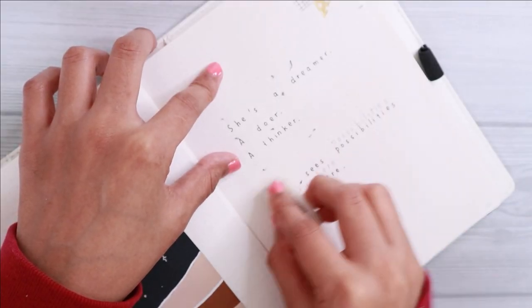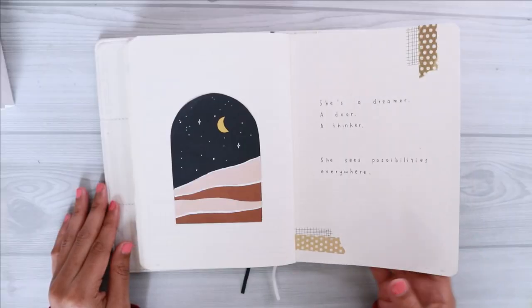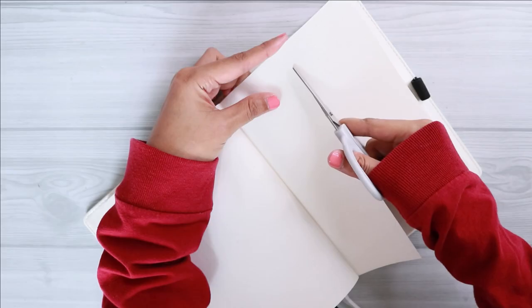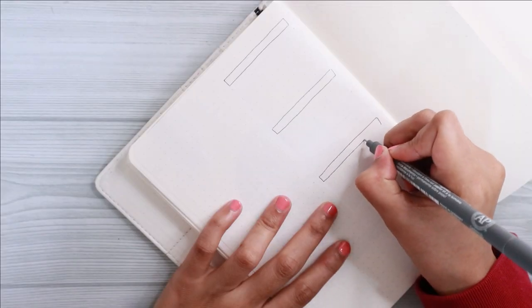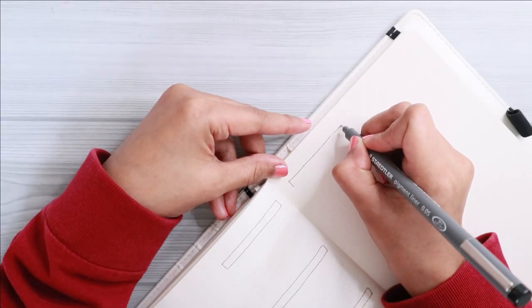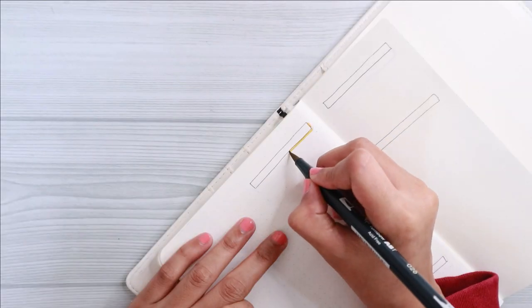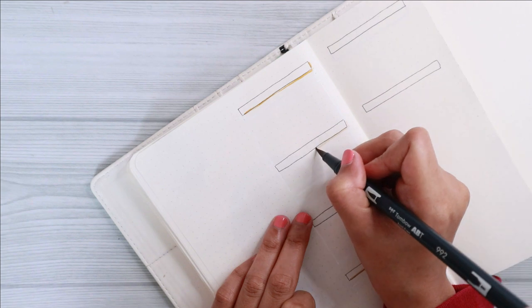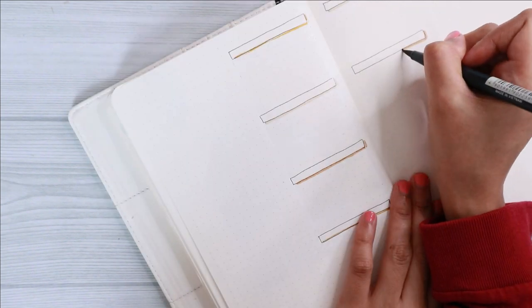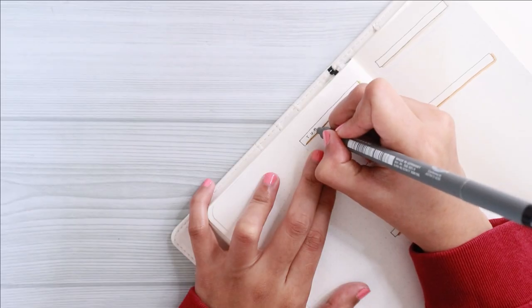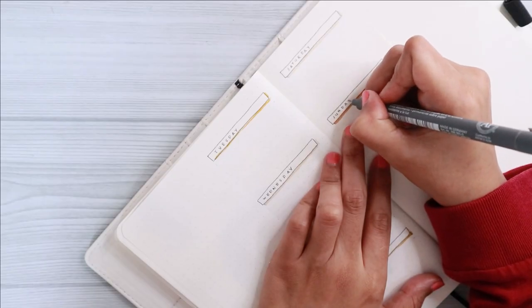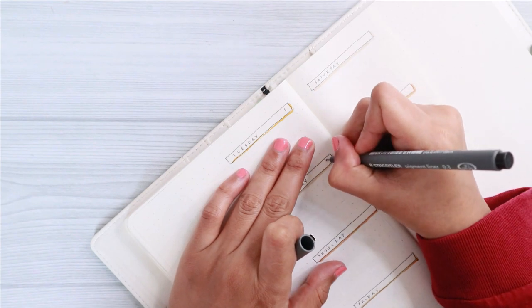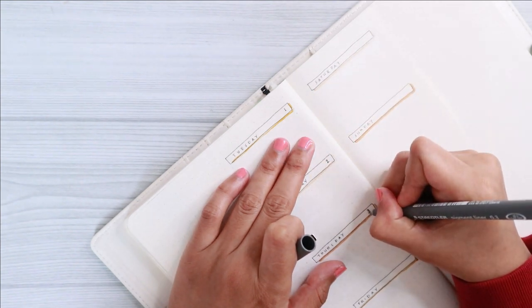The next and also the last spread for this month setup is my weekly spread. Nothing really fancy going on with this spread. But if you guys notice, I start the weekly spread with Tuesday because Monday falls on 31st of August and I don't really like to combine two months in one weekly if you get what I mean. But anyway, for the decoration of this spread, again, I'm using the stamps from Notebook Therapy's Tracking Stamps Set.